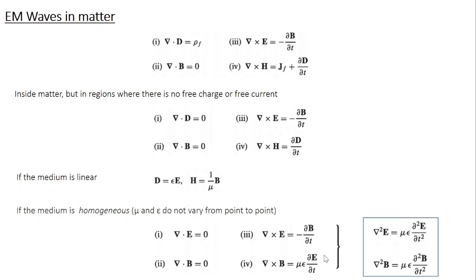Second and third equations remain the same. And in the fourth equation, substitute for H as 1 over mu into B. Similarly, D can be substituted by epsilon E. Rearrange the terms. You get curl of B equal to mu epsilon dou E by dou T.